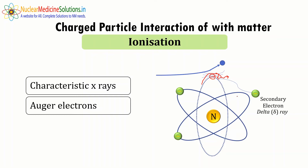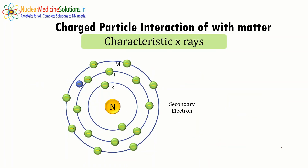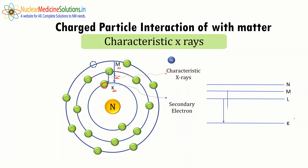The secondary electron that comes out of the orbit is also called a delta ray. Looking at the graphical representation: the incident particle knocks out an orbital electron (the secondary electron), creating a vacancy in the K shell. This may be filled by an L-shell or M-shell electron. During this transition from a higher to lower energy state, the excess energy is released as electromagnetic radiation — specifically X-rays that are characteristic to that particular atom, hence called characteristic X-rays.